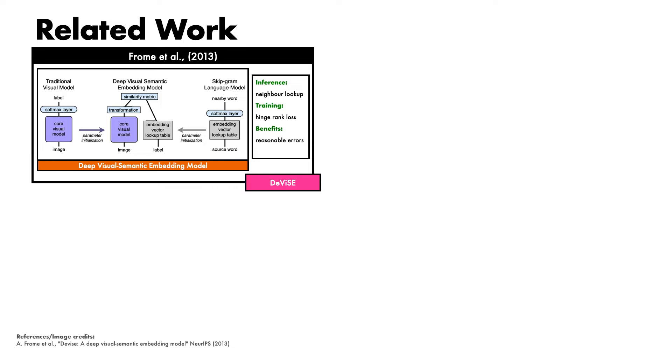DeVise illustrated two significant benefits over typical softmax 1-of-n training. The first is that the model produced more semantically reasonable errors — when considering predictions under the WordNet hierarchy, the incorrect predictions were typically closer in the hierarchical label space than those of the softmax. Secondly, and more importantly, the embedding space enables zero-shot classification, since the model can classify any concepts for which it has word embeddings. QBNorm specifically targets improvements in performance for cross-modal embedding frameworks, many of which build upon the ideas introduced in DeVise.